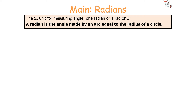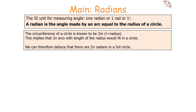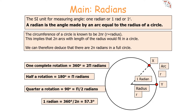The SI unit for measuring angle is the radian. A radian is the angle made by an arc equal to the radius of a circle. The circumference of a circle is known to be 2πr, where r is the radius. This implies that 2π arcs with the length of the radius would fit inside the circle, so we can deduce that there are 2π radians in a full circle. One complete rotation, or 360 degrees, is 2π radians.